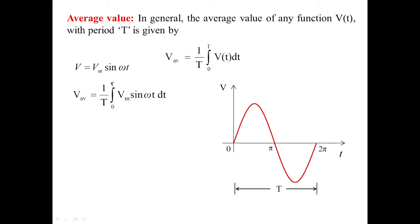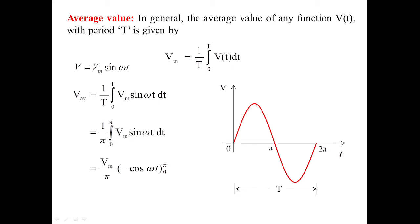So V_average = (1/T) ∫₀ᵀ Vm sin(ωt) dt. Applying this for the first half, the time period is 0 to π, so it becomes (1/π) ∫₀^π Vm sin(ωt) dt. We can take the constant Vm outside, and the integration of sine is minus cosine. Applying the upper and lower limits gives V_average = 2Vm/π, whose numerical value is equivalent to 0.637 Vm. This is how we calculate the average value of a sine wave.